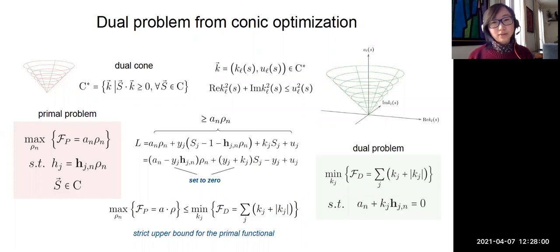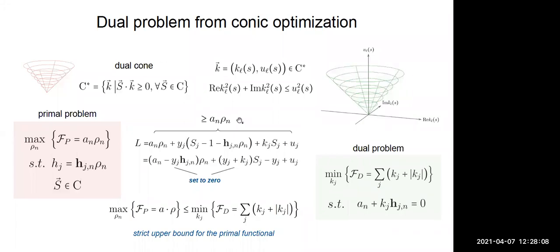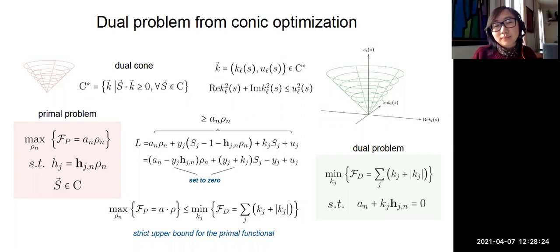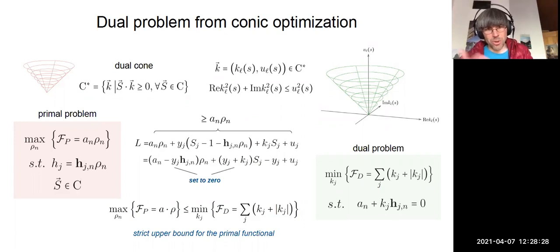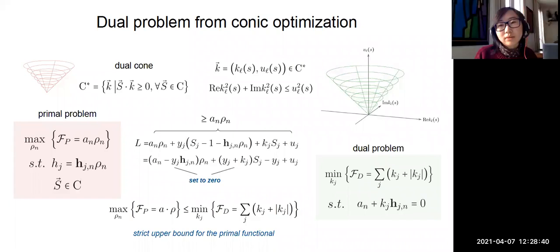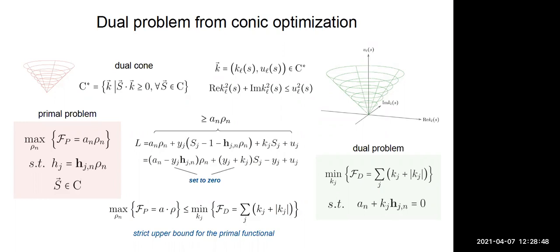Just to clarify: conic optimization is more general than semidefinite optimization — semidefinite is a special case. Here we specify a particular quadratic cone. You could rewrite a quadratic cone as a semidefinite cone and solve it with SDPB, but that would likely take longer. The quadratic cone is in fact simpler than the semidefinite cone.